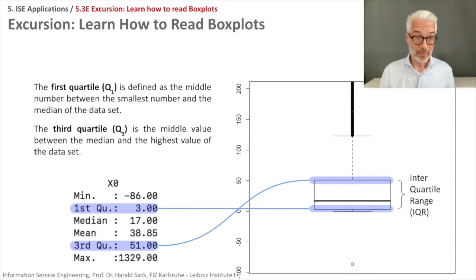Then there are the quartiles. The first quartile, Q1, is defined as the middle number between the smallest number and the median of the dataset. So this means this is then 25% of the data.